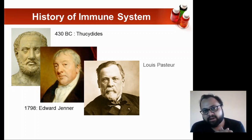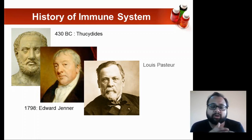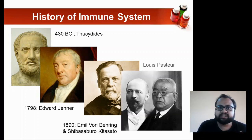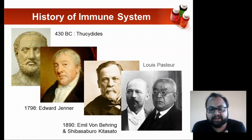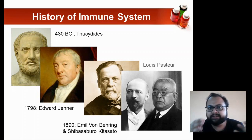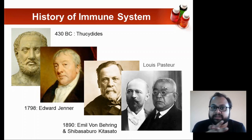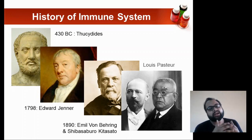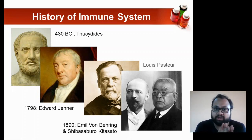The next advancement was the development of the cholera vaccine by Louis Pasteur. Finally, in 1890, experiments led by Bering and Kitsato greatly advanced the understanding of immunity. All of these experiments were basically conducted to detect antibodies present in the serum, and these antibodies provided protection against various pathogens. This is how the initial steps for immunology had begun.